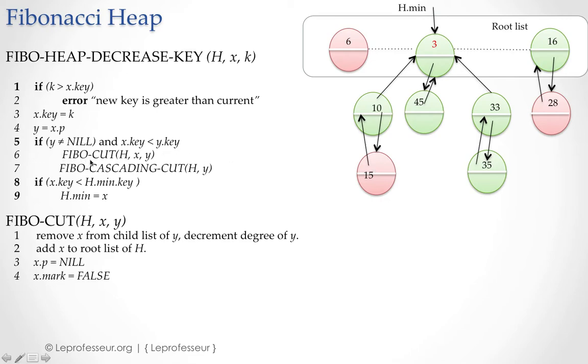For that we have another subroutine called Fibonacci cut H, X, Y. So H means heap, X means particular node for which you want to change the key, and Y is the parent node of this node. What it does basically is removing this node 15 or node X from its parent node, decrementing the degree of the parent, and putting this node in the root list.